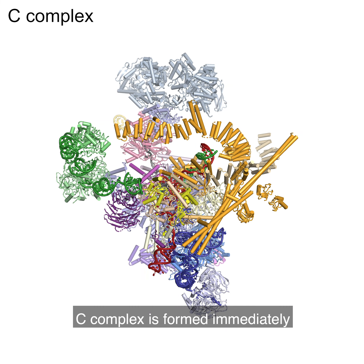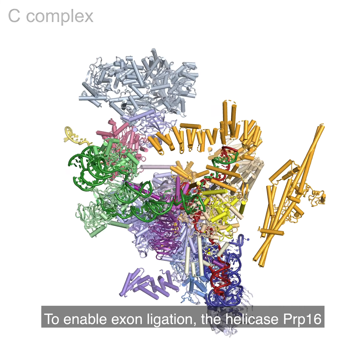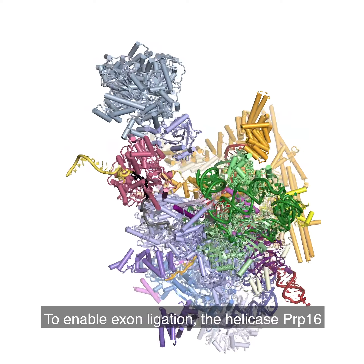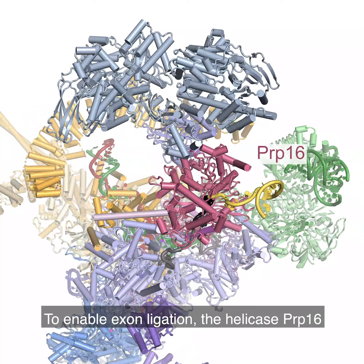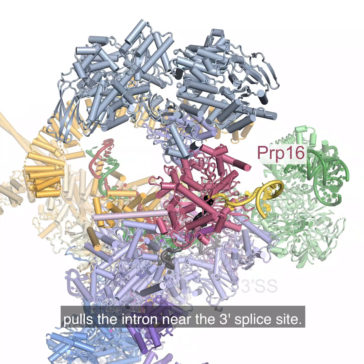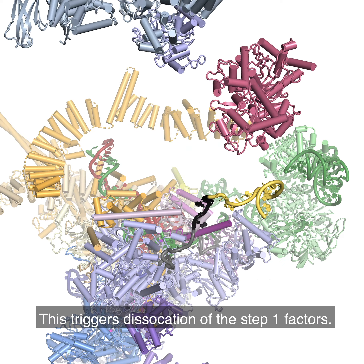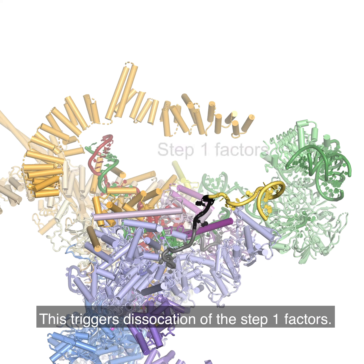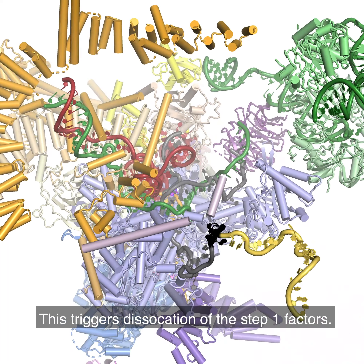C-complex is formed immediately after the branching reaction. To enable exon ligation, the helicase PRP16 pulls the intron near the 3' splice site. This triggers dissociation of the step 1 factors.